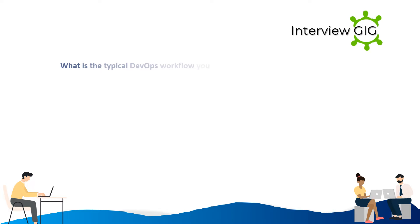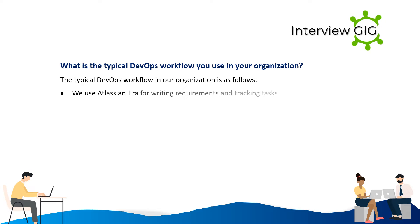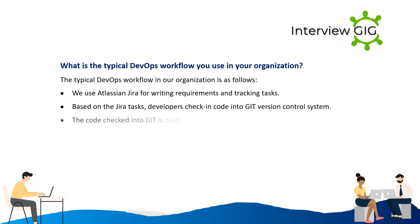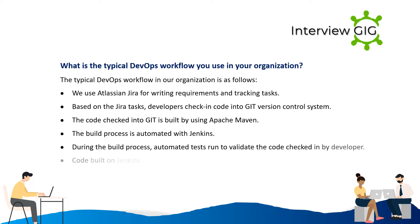The typical DevOps workflow in our organization is as follows. We use Atlassian Jira for writing requirements and tracking tasks. Based on the Jira tasks, developers check in code into the Git version control system. The code checked into Git is built using Apache Maven. The build process is automated with Jenkins, and during the build process, automated tests run to validate the code checked in by the developer.